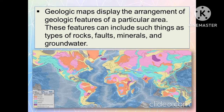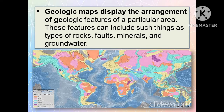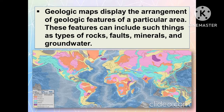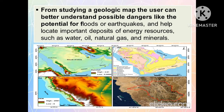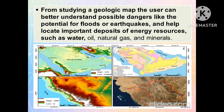Geologic maps display the arrangement of geologic features of a particular area. These features can include such things as types of rocks, faults, minerals, and groundwater. From studying a geological map, the user can better understand possible dangers like the potential for floods or earthquakes, and help to locate the important deposits of energy resources such as water, oil, natural gas, and minerals.